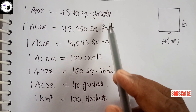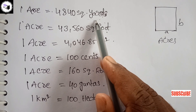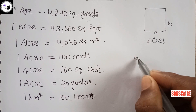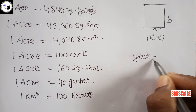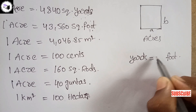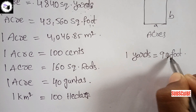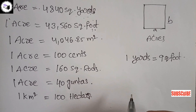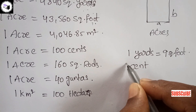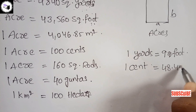Now, yards converted into feet. One square yard is equal to nine square feet.